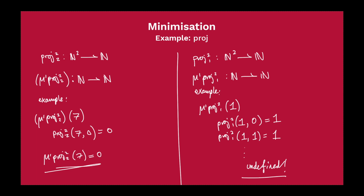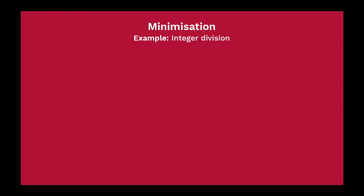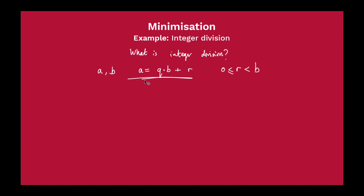We've just defined our first partial function using the partial recursive functions, but this doesn't seem useful at all. Let's look at a more practical example: integer division. For any a and b, we can say a equals some integer quotient q times b plus a remainder r, where r is greater than or equal to 0 and strictly less than b. This is just division as we're familiar with.